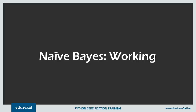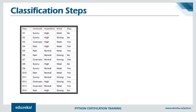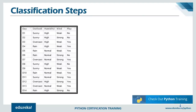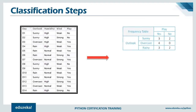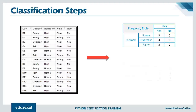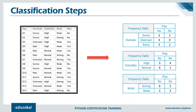Now let's see how we can implement this in a real-life scenario. Suppose we have a dataset with the outlook, humidity, and wind, and we need to find out whether we should play or not on a given day. The outlook can be sunny, overcast, or rain; the humidity is high or normal; and the wind is categorized as weak or strong. First, we create a frequency table using each attribute of the dataset. The frequency table for outlook, humidity, and wind each look at the counts for their respective values.